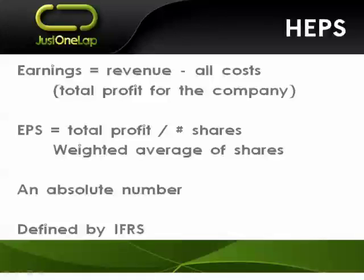Earnings is revenue less all costs — in other words, the profit that the company made. You get a total profit, that's your earnings. To get earnings per share, you take that total profit and divide it by the number of shares in issue for that particular company. Typically they'll use a weighted number of shares, so if over the period — be it six months or twelve months — the number of shares increased or decreased due to share issues, an acquisition, a rights issue, or a share buyback, they will use a weighted number of shares. That gives you earnings per share.